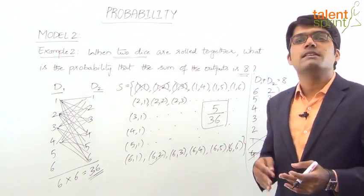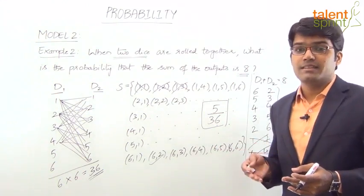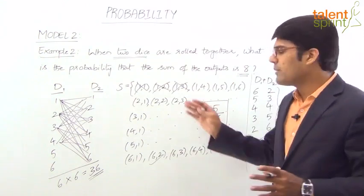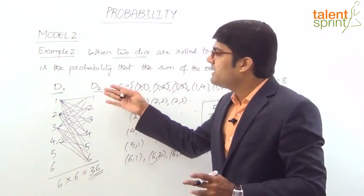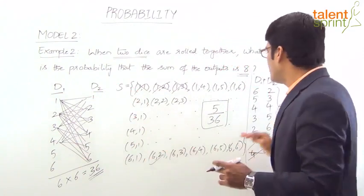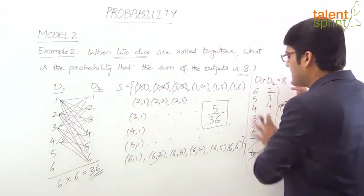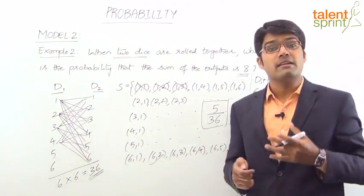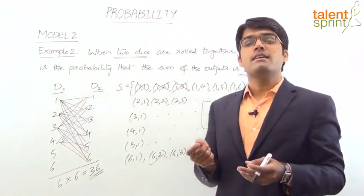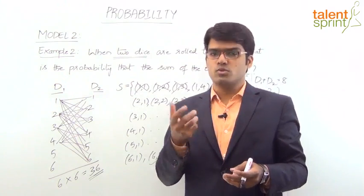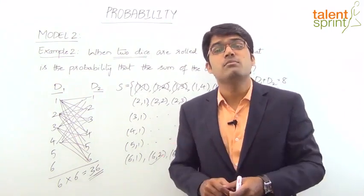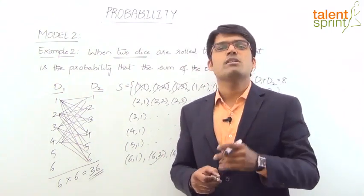The favorable pairs that sum to 8 are: (2,6), (3,5), (4,4), (5,3), (6,2) — wait, also (2,6) confirmed — total 5 favorable outcomes. So the probability is the number of favorable outcomes divided by total number of outcomes, giving 5/36.